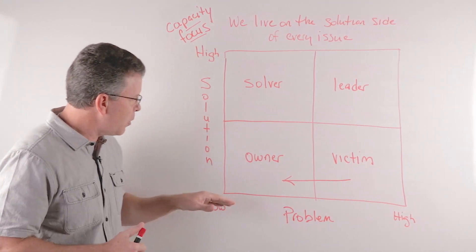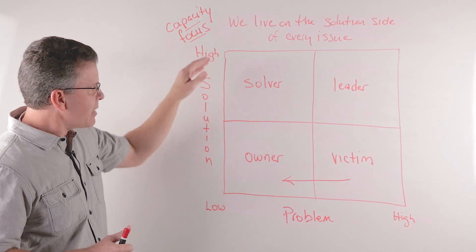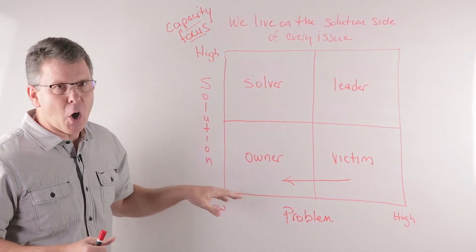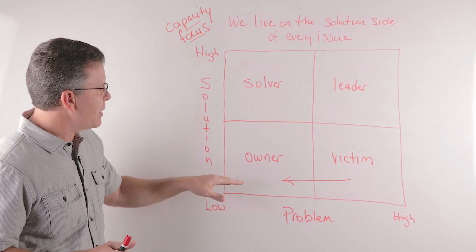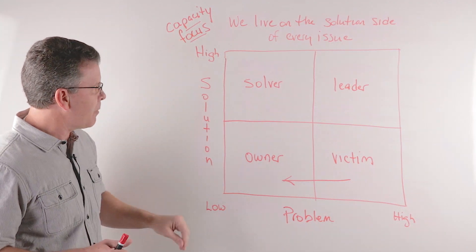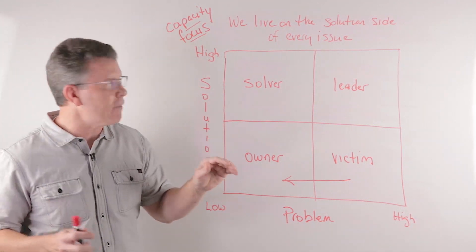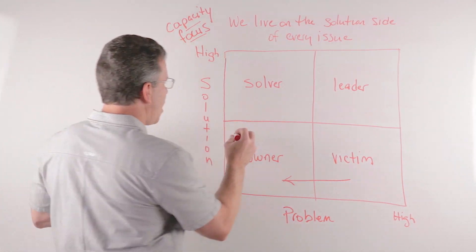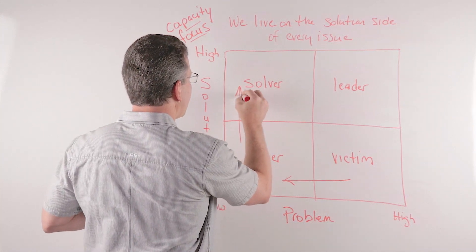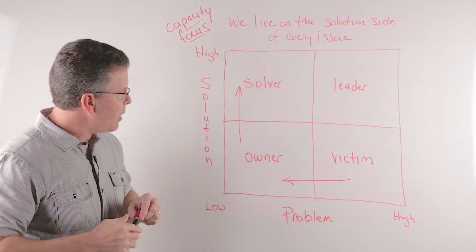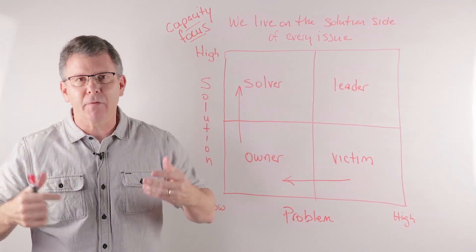The next level is those people who are high on the solution side. Maybe they don't even have a great ownership in the problem, but they have a high capacity to solve problems. And so they're willing to help others solve it. So we're going to call that person a solver. And so when someone has high capacity, you try to help people solve their issues.